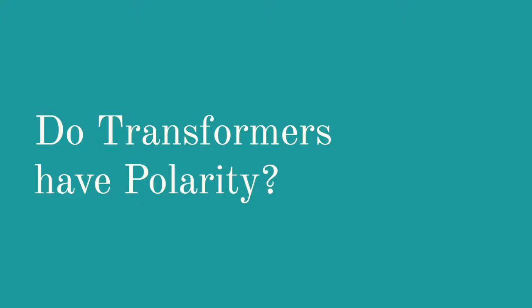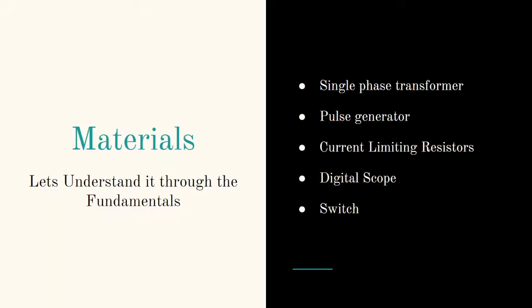You could do an experiment to identify polarity. We'll do a simple experiment to identify the polarity of a transformer and see how it affects the way a three-phase winding can be configured and its vector group. For this we need a single-phase transformer, a pulse generator for the primary power source, current monitoring on primary and secondary, a digital scope to identify voltage and current curves, and a switch to turn the circuit on and off.